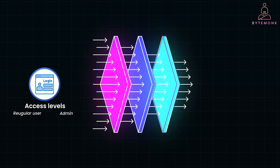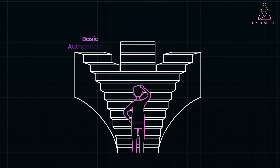API authentication is critical for securing your APIs and ensuring that only authorized users can access sensitive data. From basic authentication to OAuth and JWT, there are several methods available, each with its own benefits and trade-offs. Remember, authentication verifies identity while authorization determines access. If you want to learn more about specific API authentication methods like OAuth or JWT, check out the links in the description for deeper dives into those topics. And don't forget to like and subscribe for more tech videos.